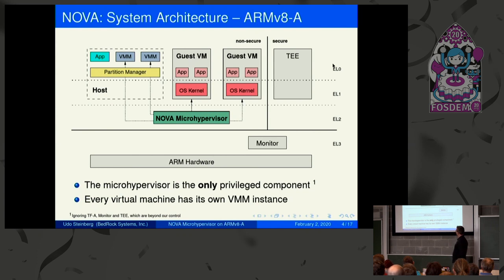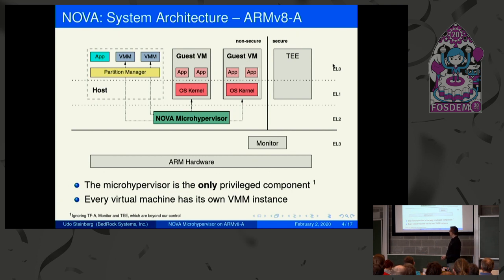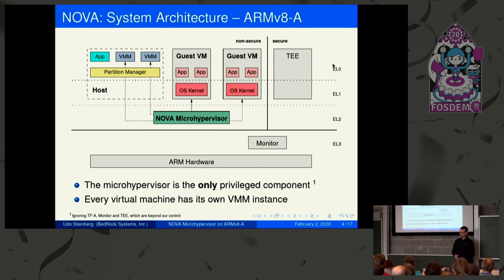At the bottom we have the hardware, then four privilege levels which ARM calls execution levels. Starting from the top: EL0 is user mode, EL1 is supervisor mode where the kernel runs, EL2 is hypervisor mode — this is where Nova lives — and EL3 is monitor mode, where a firmware monitor can switch between non-secure and secure world. We do not own or control this monitor or a trusted execution environment like TrustZone.